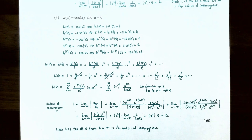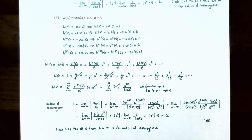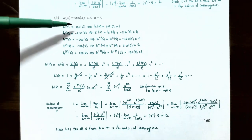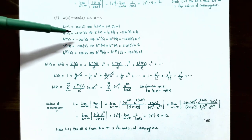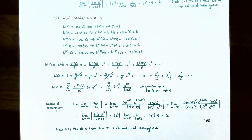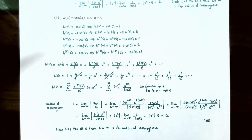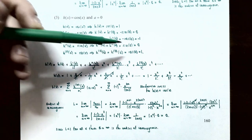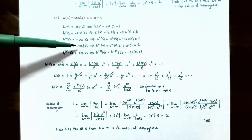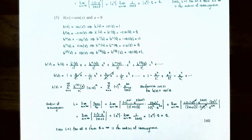Number 3: h(x) = cos(x), centered at a=0. h(0) = cos(0) = 1. h'(x) = -sin(x); h'(0) = 0. h''(x) = -cos(x); h''(0) = -1. h'''(x) = sin(x); h'''(0) = 0. The fourth derivative is cos(x); h''''(0) = 1. Just like sin(x), the derivatives repeat in cycles of four.